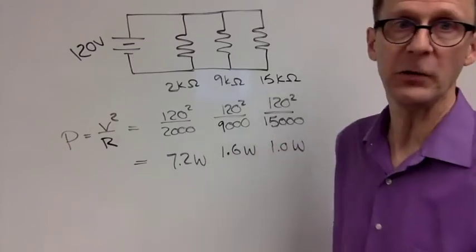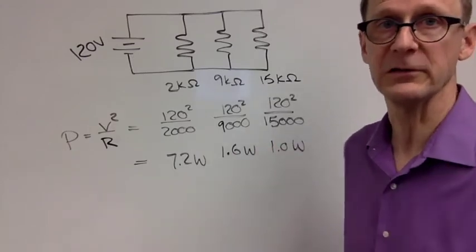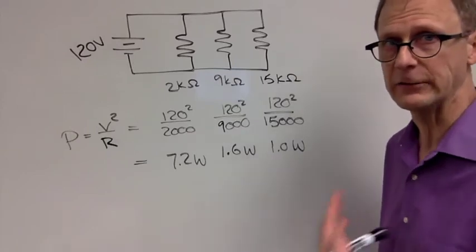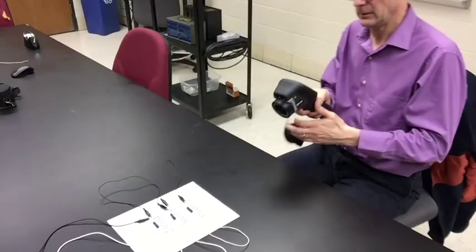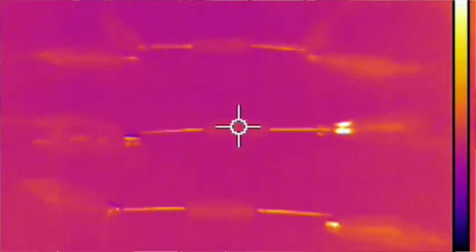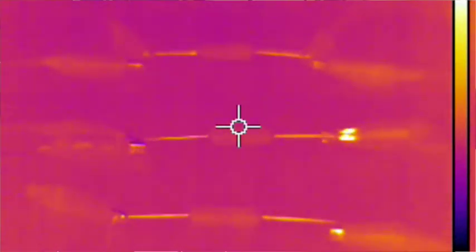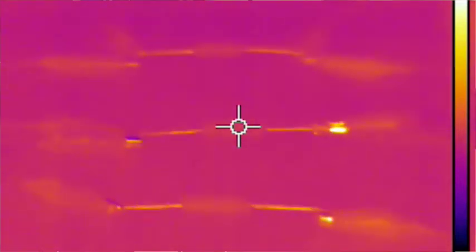So in fact, the 2,000 ohm resistor is the one that has the greatest power and generates the most heat. I have the infrared camera, it's going to be recording video. It's now recording, and here we go.